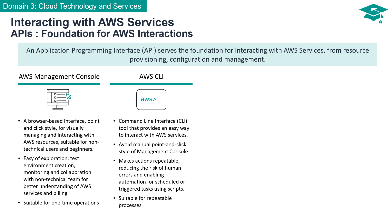AWS Command Line Interface, or CLI, is a powerful tool offering a command-based approach, steering clear of the manual point-and-click style of the management console. It's all about making actions repeatable, reducing the risk of human errors, and enabling automation for scheduled or triggered tasks using scripts. If you're looking for a solution tailored for repeatable processes and a more efficient workflow, the AWS CLI is your go-to option.